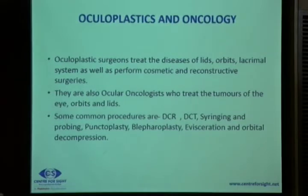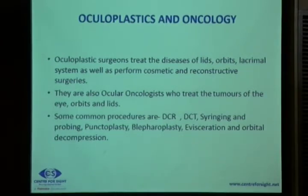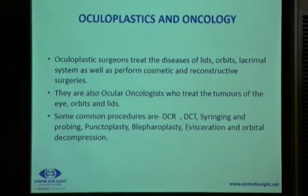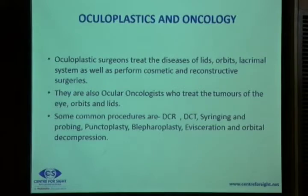Next is oculoplastics and oncology. The oculoplastic surgeon treats diseases of the lids, orbits and adnexa, and performs cosmetic and reconstructive surgeries. They are also ocular oncologists, dealing with tumors of the eyes, orbits and lids. Common procedures include DCR (dacryocystorhinostomy), DCT (dacryocystectomy), syringing and probing, punctoplasty, blepharoplasty, evisceration and orbital implant, orbital decompression, and reconstructive surgeries.